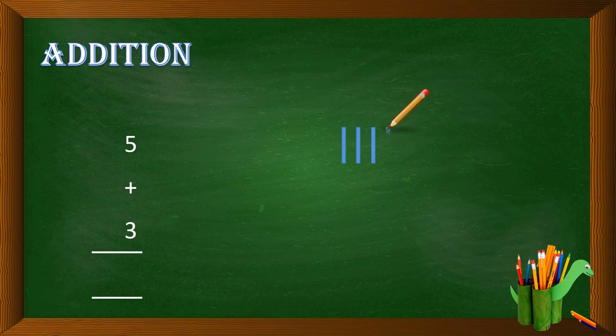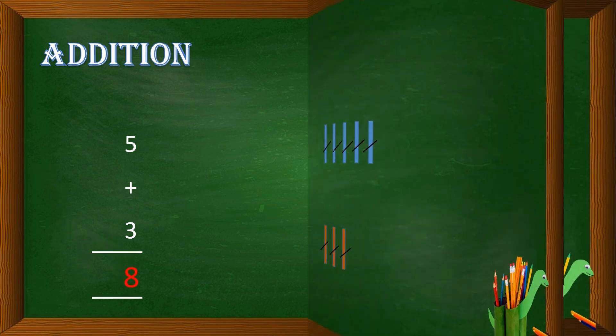5 plus 3. Draw 5 lines: 1, 2, 3, 4, 5. Now we draw 3 lines: 1, 2, 3. Now we count all the lines together: 1, 2, 3, 4, 5, 6, 7, 8. So the sum of 5 and 3 is 8. Kids, isn't it easy?